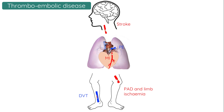Blood clots form the pathophysiological basis of a few common and often serious diseases in medicine. These include myocardial infarction, ischemic stroke, critical limb ischemia, deep vein thrombosis and pulmonary embolism, to name a few.